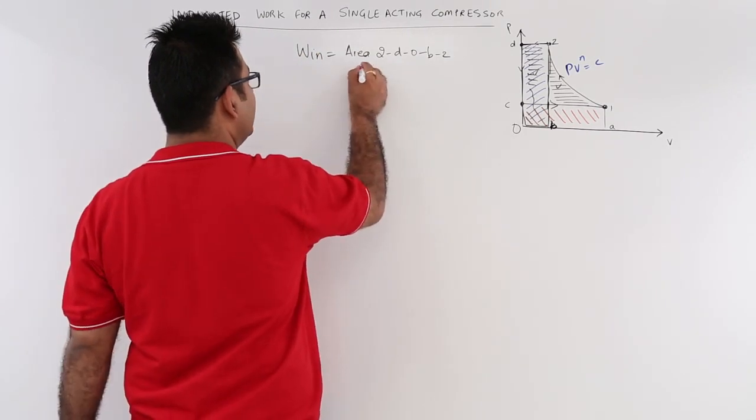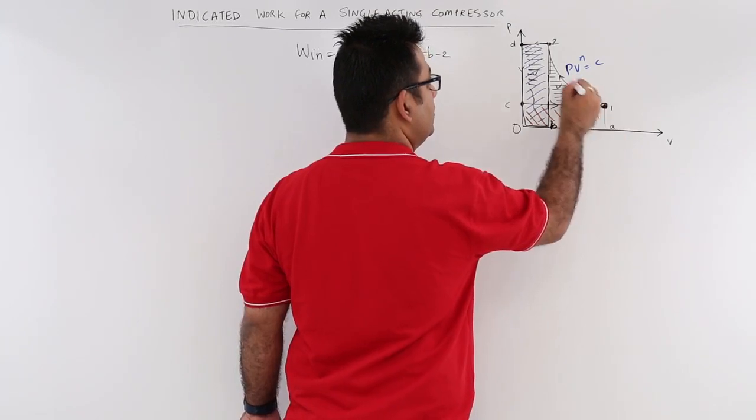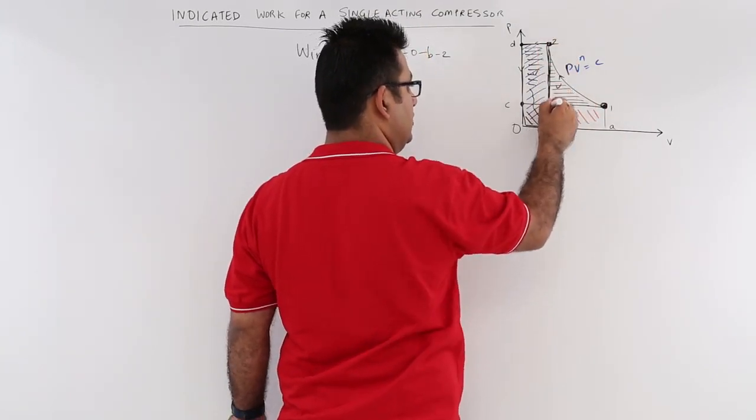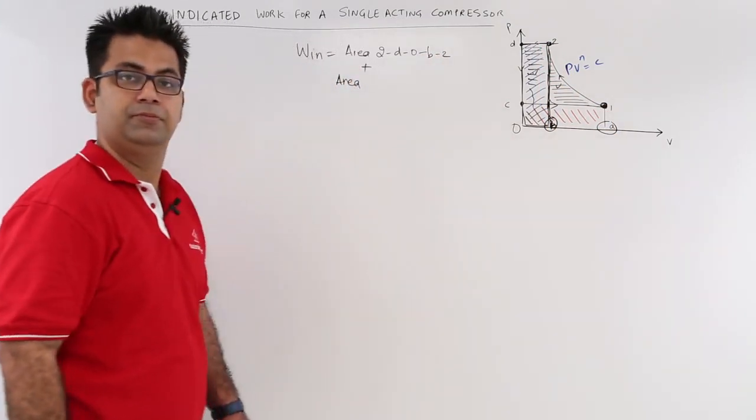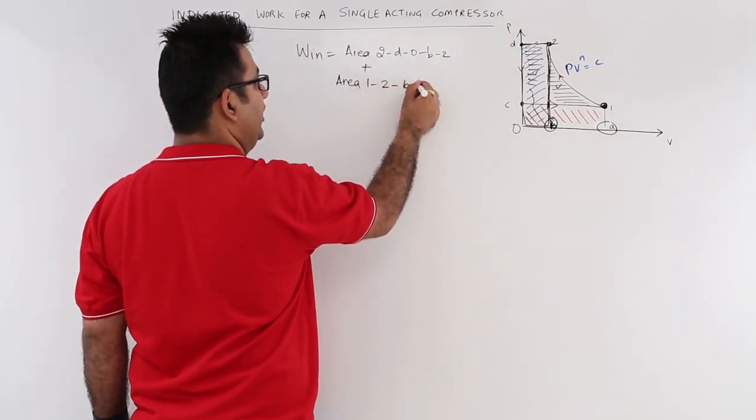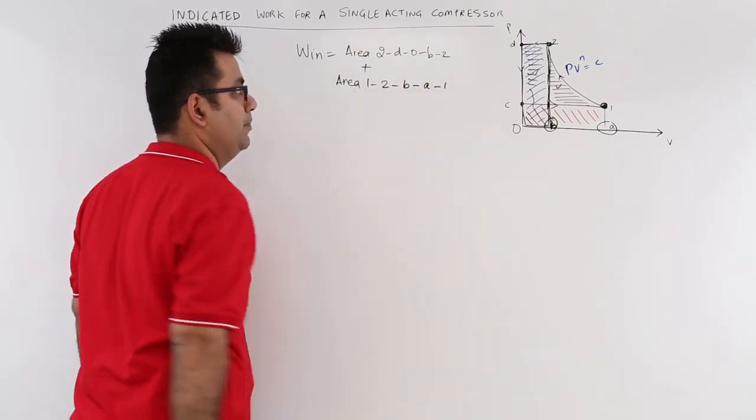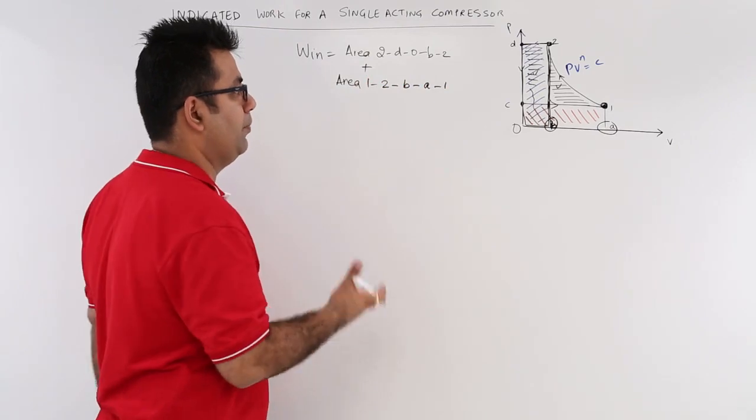Then you have to add the area which is 1, 2, B, A, 1. So you will have area 1, 2, B, A, 1. Now what is this area? This is the work done during this polytropic compression.